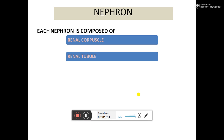Each nephron is composed of a renal corpuscle and renal tubules. The kidney has two important cross-sections: the outer one is the cortex and the inner one is the medulla. Some parts of the nephron are present in the cortex and some parts in the medulla, which plays a significant role in the formation of urine.